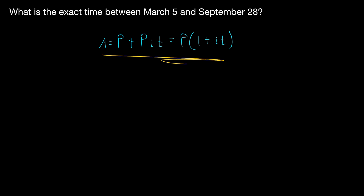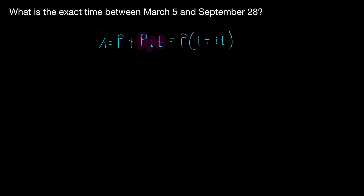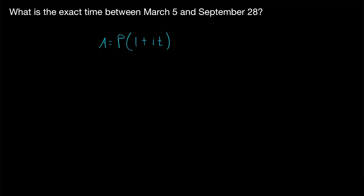Remember what is often called the simple interest formula: the amount in an interest-bearing fund at a given time is equal to the principal investment P, plus that principal investment multiplied by the simple interest rate I, multiplied by the amount of time that has passed, T. Factoring P out gives us the more common expression P times (1 + IT). Our simple interest rate I is most commonly going to be an annual interest rate.